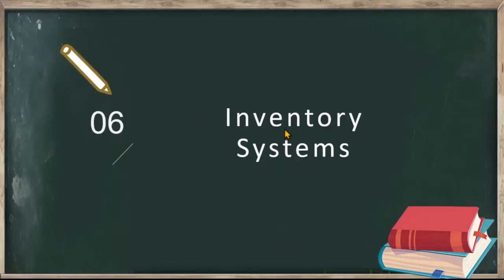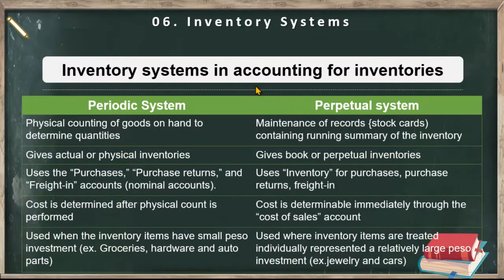Then we have the inventory systems. There are two inventory systems in accounting for inventories: we have the periodic system and we have the perpetual system.